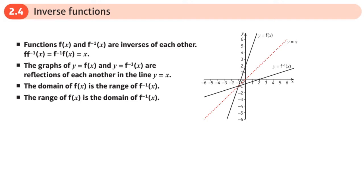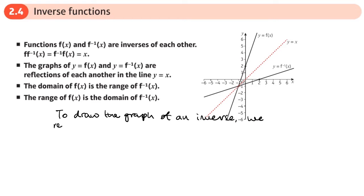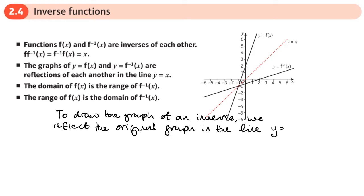This is the full section of the functions and graphs chapter on inverse functions. You've done these at GCSE. The new thing at A-level is sketching the graph of an inverse: we reflect the original graph in the line y = x. Here's the original graph, here's the line y = x, and here's its reflection, because the x and y values swap around.